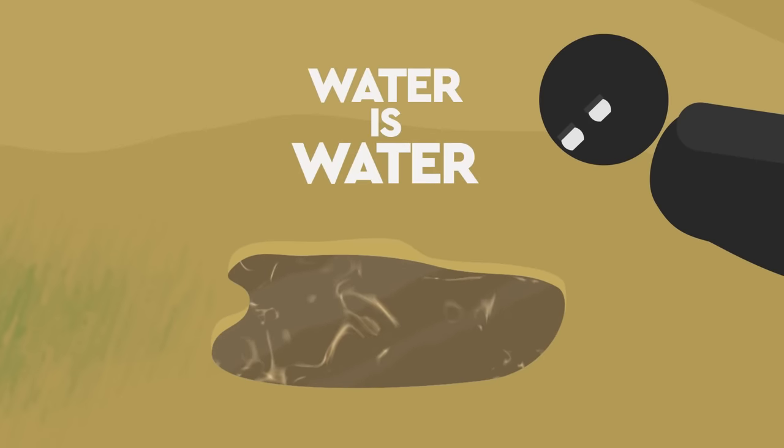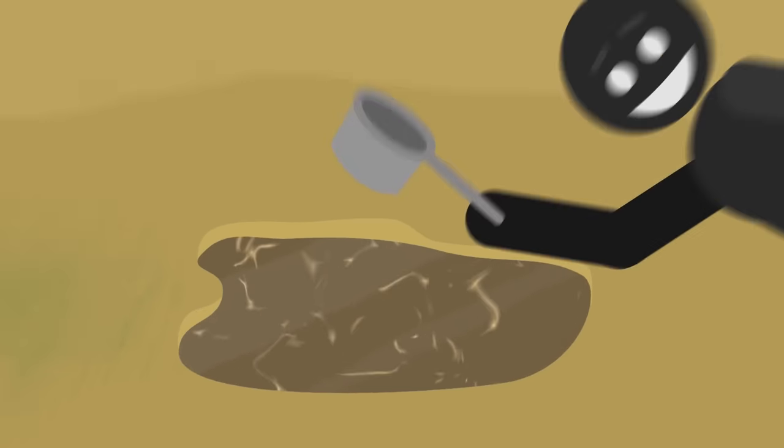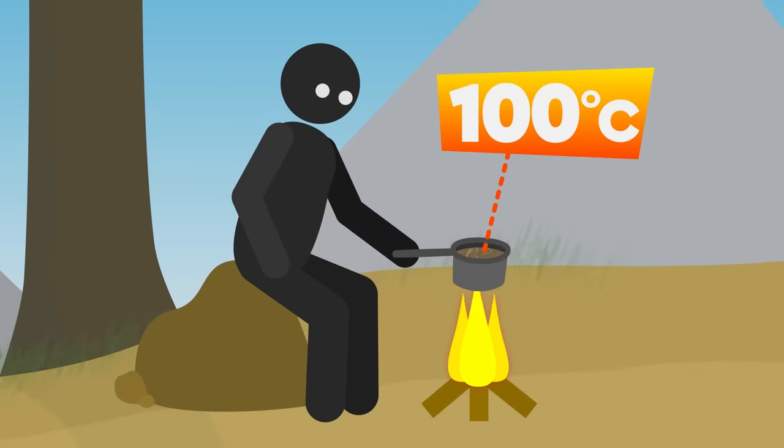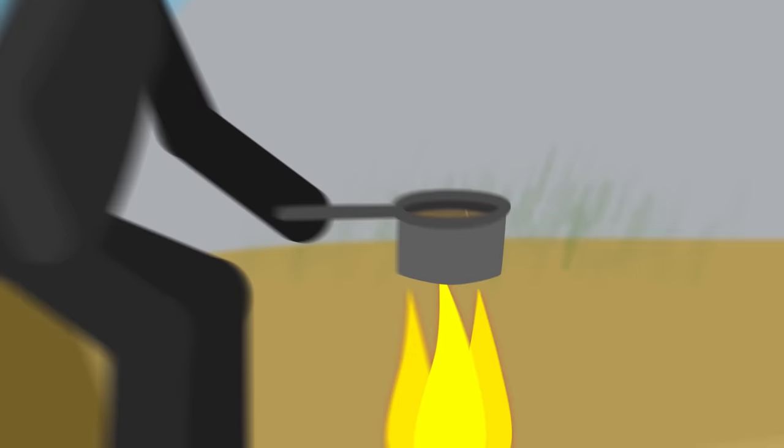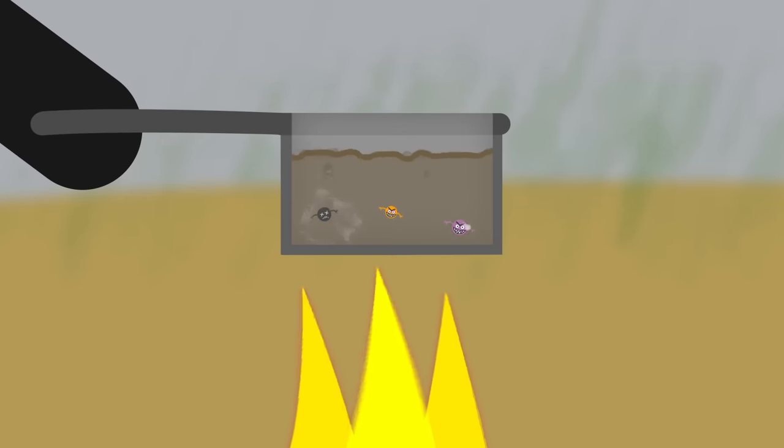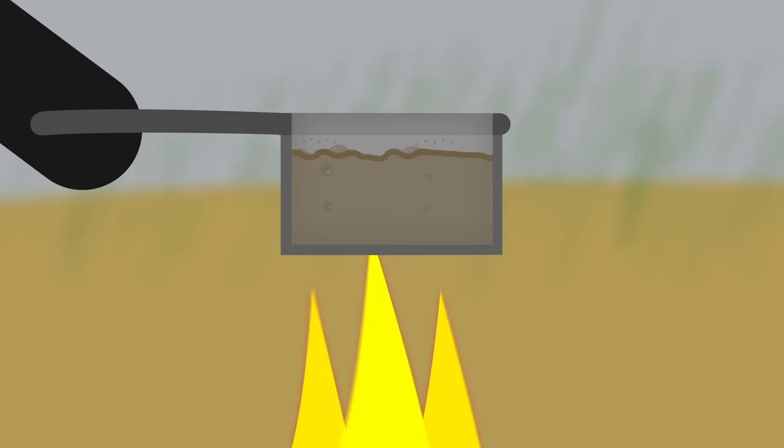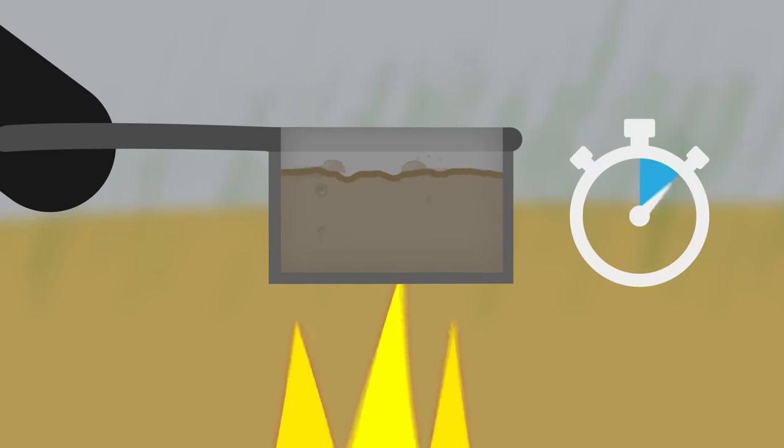Still, water is water, right? Boil it, and we're good to go. Well, the boiling point of water, 100 degrees Celsius or 212 degrees Fahrenheit, certainly is hot enough to kill most bacteria, viruses, and parasites almost instantly. And a good rule of thumb is to aim for a vigorous rolling boil for a full minute.